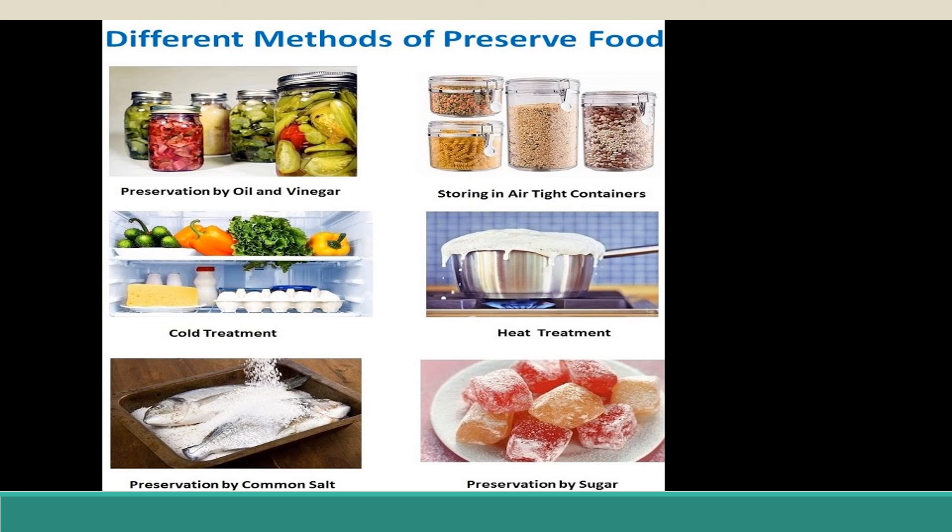The second method is boiling the food — giving heat treatment. Milk is boiled or food is boiled when we cook it, which kills microorganisms. In dairies, milk is mainly preserved by the pasteurization method. Pasteurization is not boiling the milk; pasteurization is heating the milk up to around 65 to 70 degrees Celsius and then suddenly cooling the temperature to around 13 degrees Celsius.